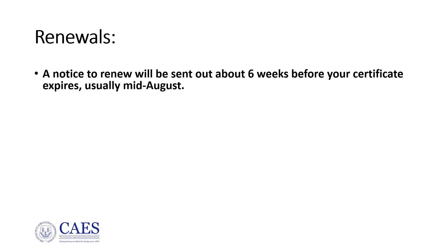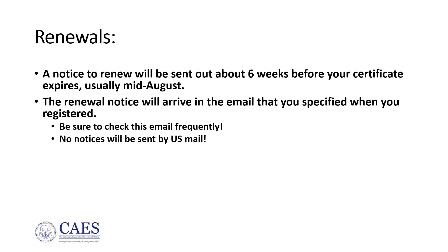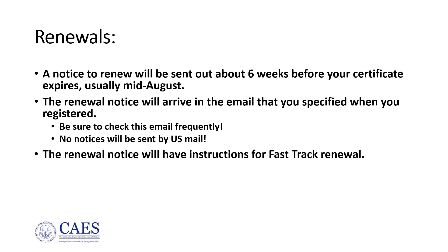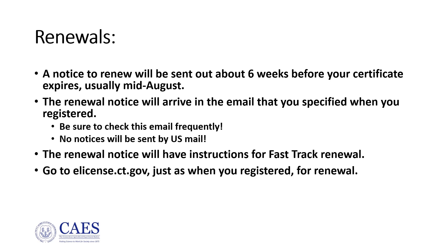Renewal notices go out about six weeks before your certificate expires, around mid-August. Renewal notices are sent to the email that we have on file, so be sure to check that email occasionally as well as your junk mail folder. Renewal notices include the instructions for Fast Track Renewal. You do not need to remember the username and password that you originally entered — you will be given a one-time-only PIN for use in the renewal. You will receive your new certificate by email.